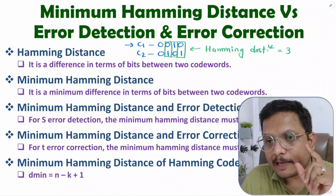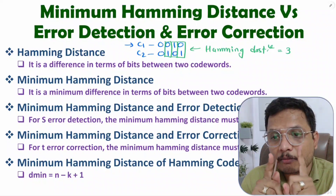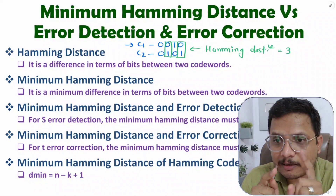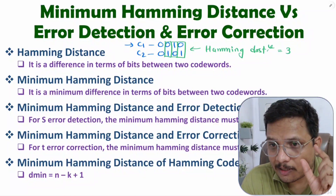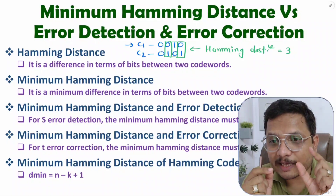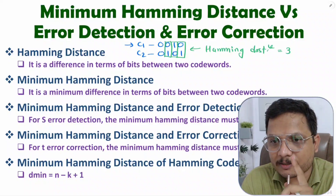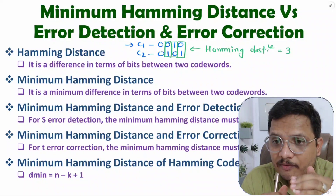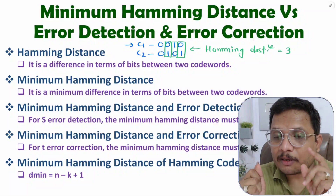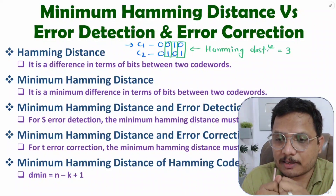One necessary condition you need to understand is that both code words must have similar length. If c1 has a length of 8 bits and c2 has a length of 6 bits, then you cannot compute the hamming distance between c1 and c2. It is applicable only if both code words have equal length.